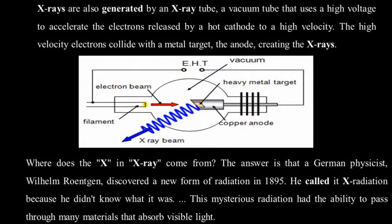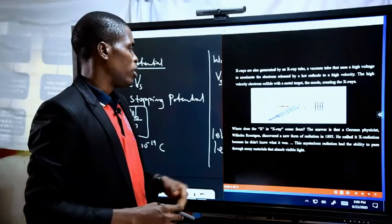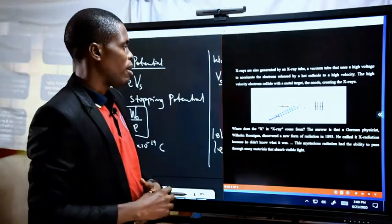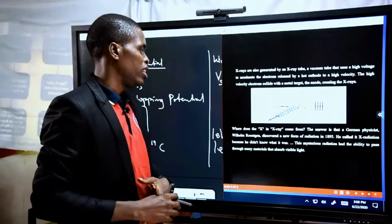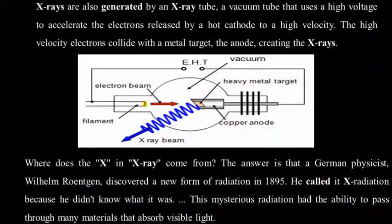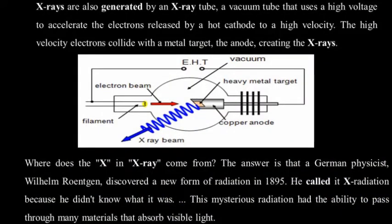X-rays were first produced by Wilhelm Röntgen in 1895 when he was trying to experiment on the properties of electrons, based on the atomic theory. X-rays were discovered by the German physicist Wilhelm Röntgen in 1895. At that time, X-rays were predominantly used to view the internal structures of the human body.